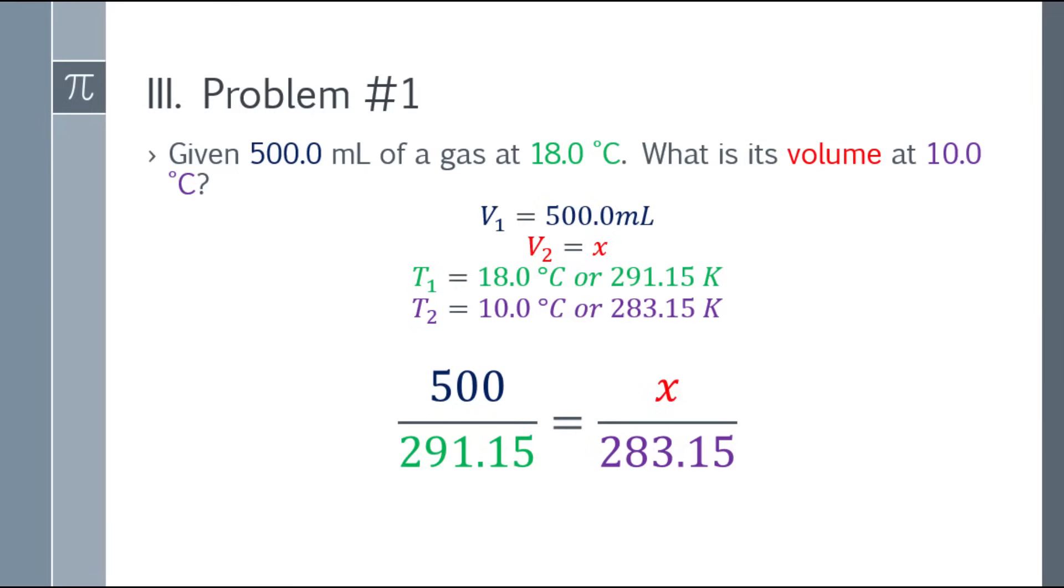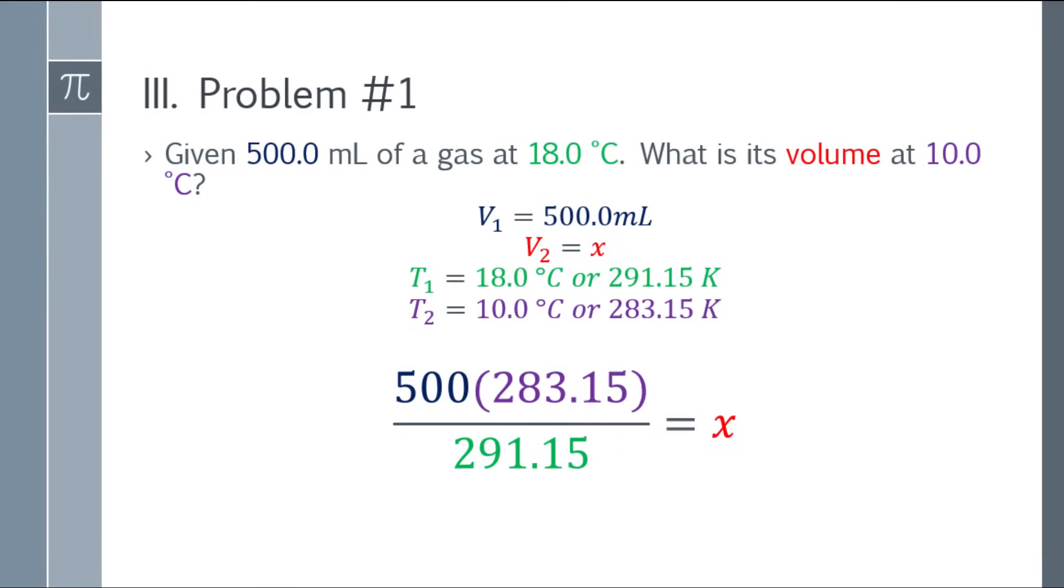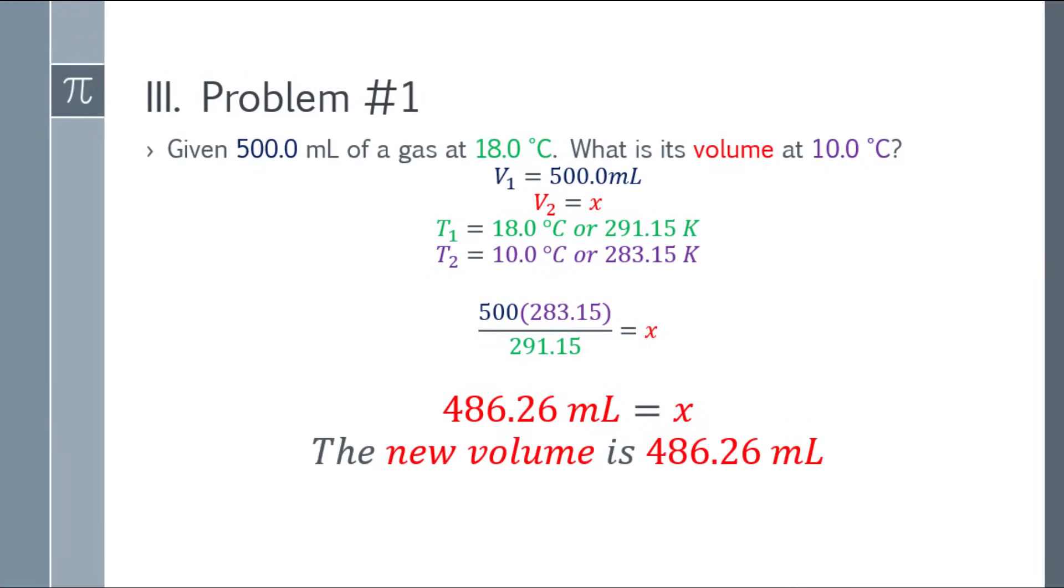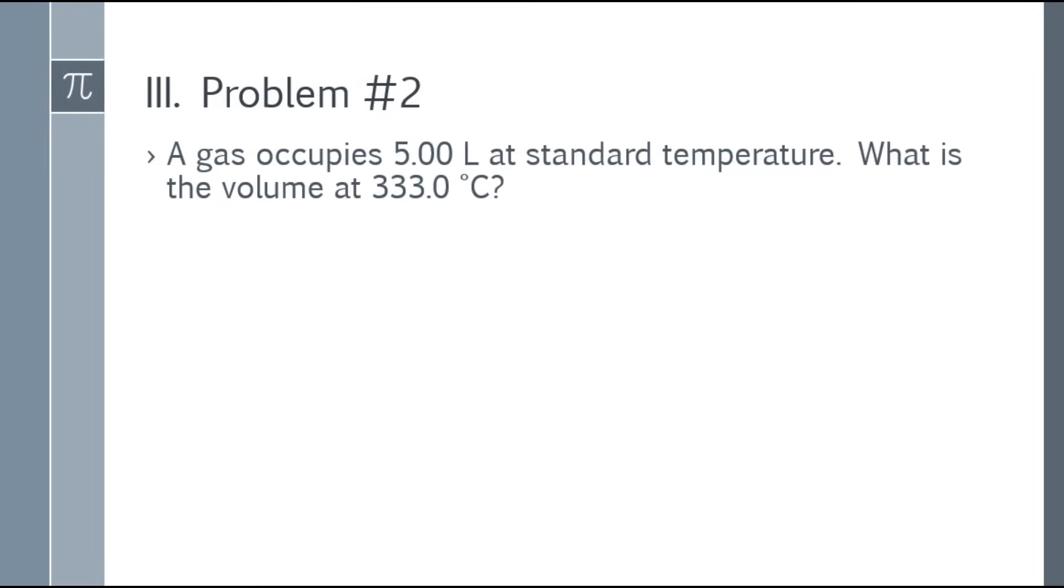Next, you can cross multiply to find the value of x. So multiply 500 by 283.15, and divide that answer by 291.15. You will get the final answer of 486.26. That will be the new volume, the new V2.